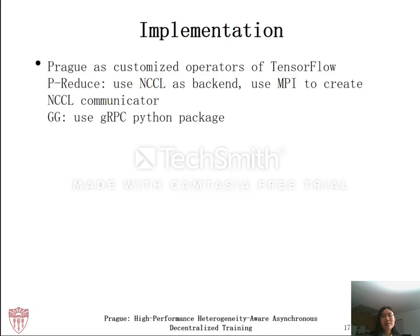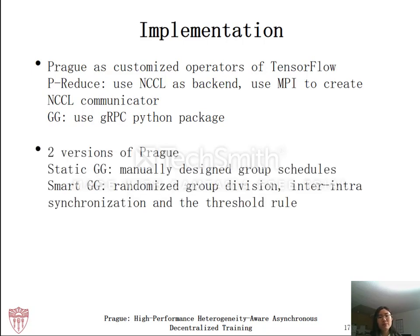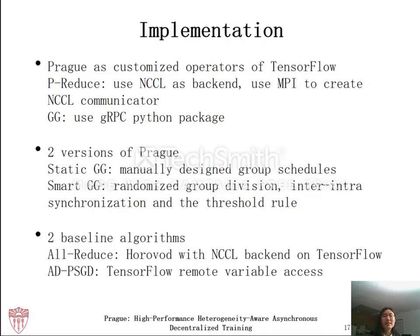We implemented our system as customized operators of TensorFlow. For partial allreduce, we used the NCCL backend to leverage state-of-the-art allreduce operations. We implemented GG using the gRPC Python package. Two versions of Prague are implemented: one is static GG with manually designed group schedules, and the other is smart GG with all the proposed optimizations. We also implemented two baseline algorithms on TensorFlow: allreduce (using Horovod with NCCL backend) and ADPSGD (using locking mechanisms for atomicity and remote variable access for peer-to-peer model averaging).